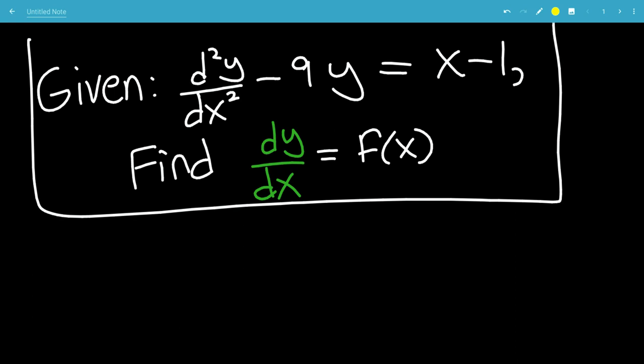Also, don't forget to subscribe and turn on notifications so you don't miss a video. We're going to write the second derivative of y with respect to x as y double prime minus 9 times y equals x minus 1.